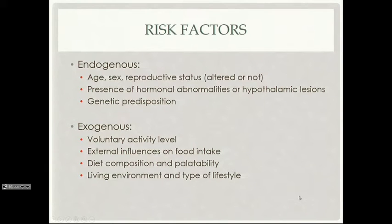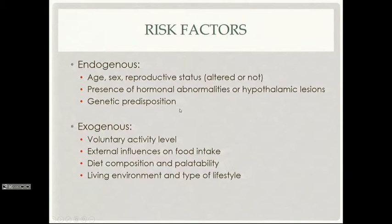Risk factors include endogenous factors: the animal's age, sex, and reproductive status — whether they've been altered or not. There are many things that make an animal more likely to become heavy, including hormonal abnormalities, hypothalamic lesions, hypothalamic abnormalities, and genetic predisposition. Animals bred for hundreds of years to be outside and active, when brought inside and put on a couch, have bodies built to burn calories through exercise that they're no longer doing.